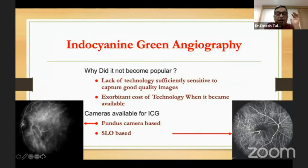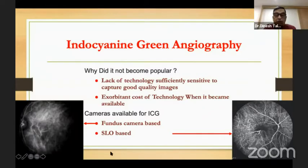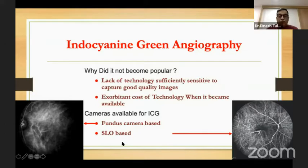If it's such a great investigation, why didn't it become popular? It didn't become popular because of the lack of technology sufficiently sensitive to capture good quality images, and the exorbitant cost of technology when it actually became available. Fundus-based cameras give you a limited image, while SLO-based cameras give you a much clearer detail of the choroidal vasculature — but these are very expensive, and without them you don't feel very good about doing an ICG.